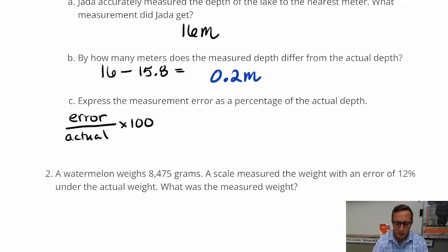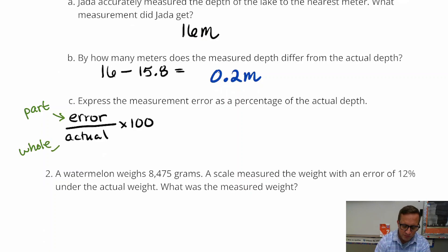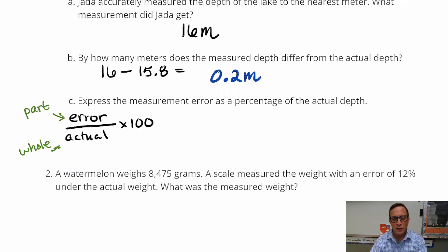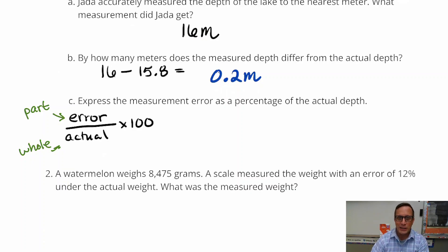This is really no different than the part divided by the whole. The part is the error — how much were they off? And the whole is the original number, in this case the actual literal measurement, not just a human estimate. It's very, very precise.